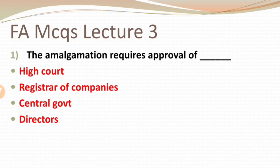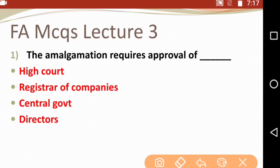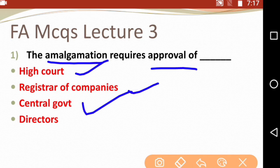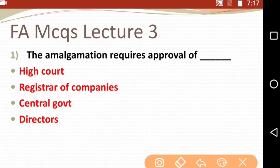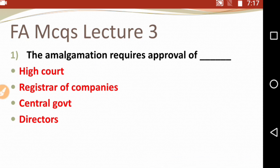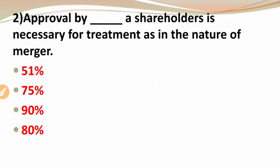Let's start. The first MCQ is: amalgamation requires approval of — options are High Court, Registrar of Companies, Central Government, and Directors. The right answer for this question is High Court. Approval of the High Court is necessary in amalgamation.